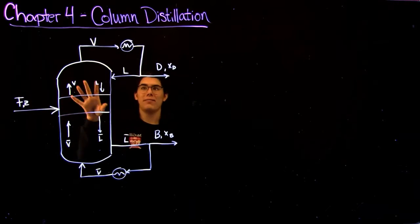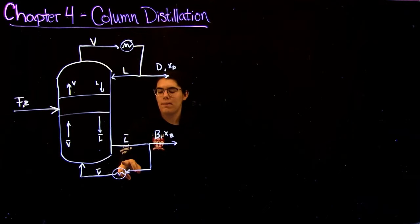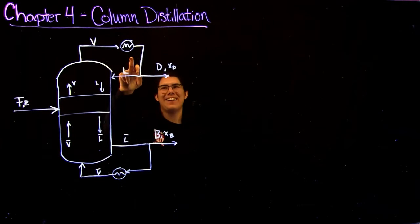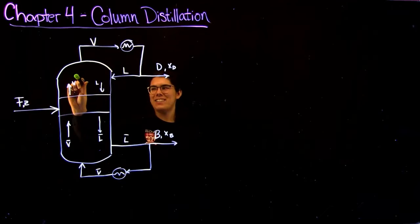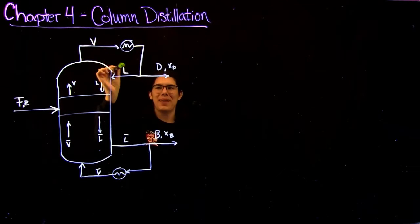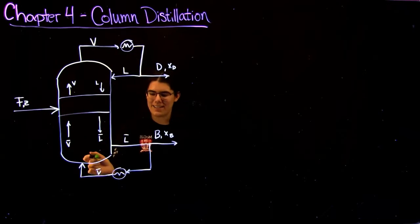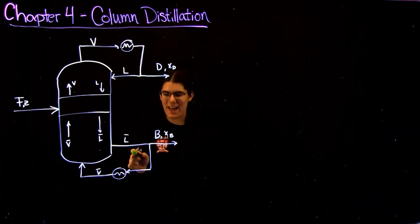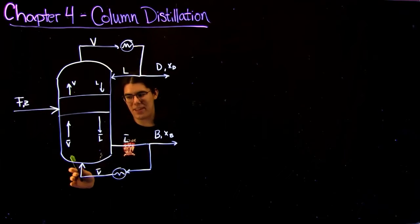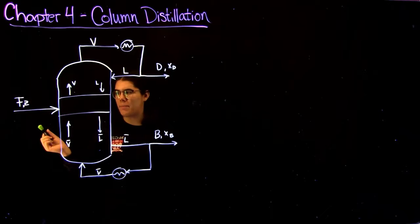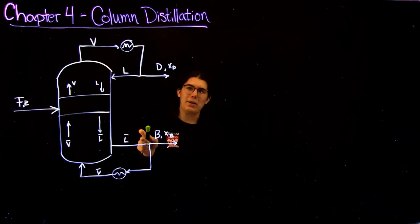Another important part of this column is your reboiler and your condenser. The condenser takes the V that's coming out of the column and turns it back into a liquid so that it can get cycled back down, and likewise the reboiler takes the L that comes out of the column and turns it into a vapor V going back in. What you get out of your column is your distillate and your bottoms.